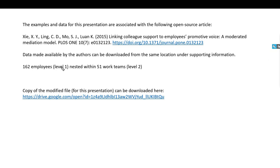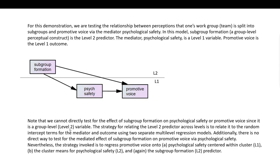The actual dataset contains data on 162 employees measured at level 1 who are nested within 51 work teams — that's the level 2 unit. We're going to be testing the relationship between perceptions that one's work team is split into subgroups and promotive voice, via the mediator psychological safety. Subgroup formation is a group-level perceptual construct and will be the level 2 predictor, while psychological safety and promotive voice are both measured at level 1 — hence the 2-1-1 nature of the model.